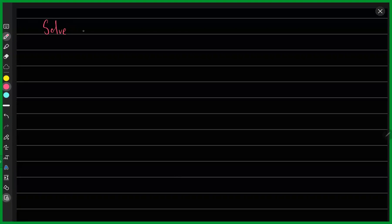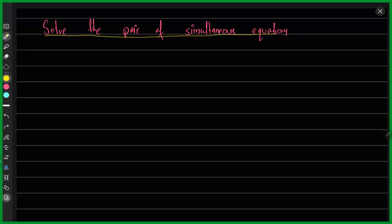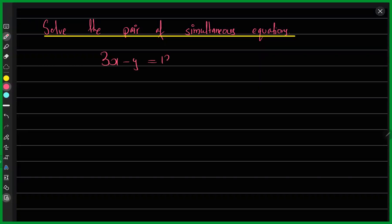The question says: solve the pair of simultaneous equations. This is the question from the past paper and your equations are 3x minus y equals 13 and 2x plus 3y equals 5.